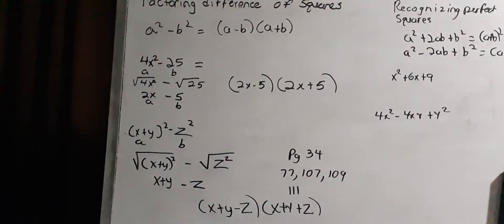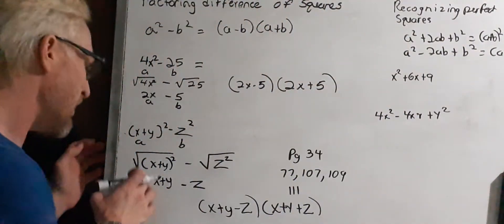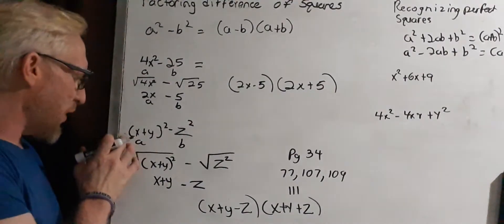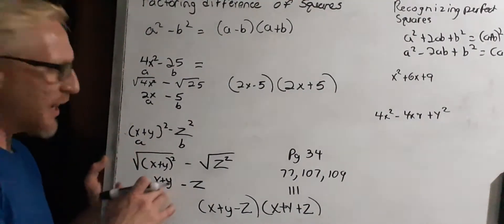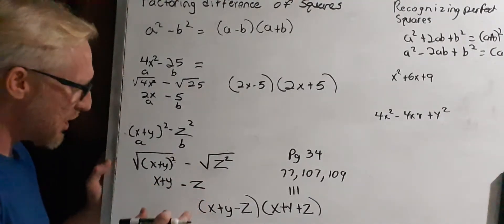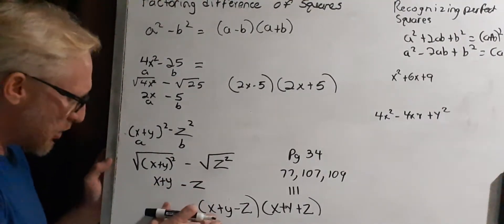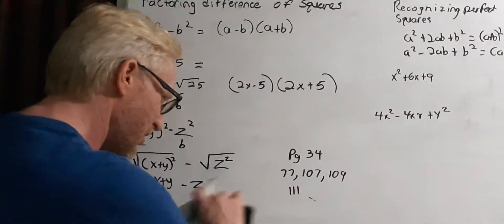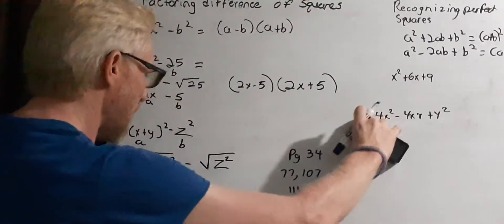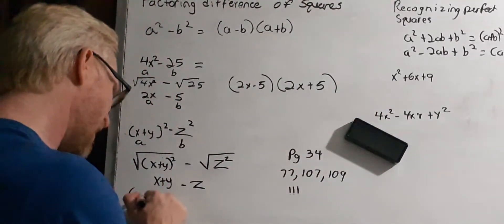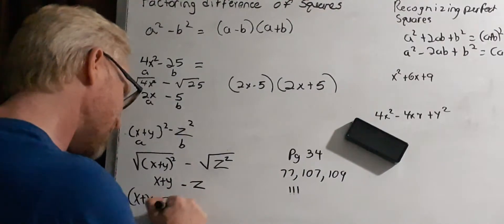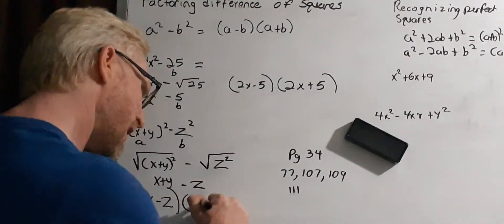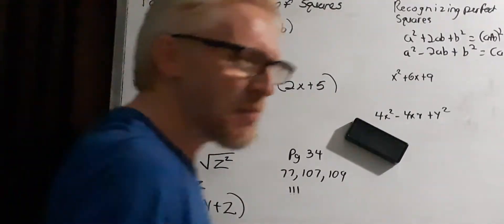So the factored form is x plus y minus z times x plus y plus z. To recap: I called the square root of (x plus y) squared, which is x plus y, my a, and the square root of z squared, which is z, my b. That gives us x plus y minus z times x plus y plus z.